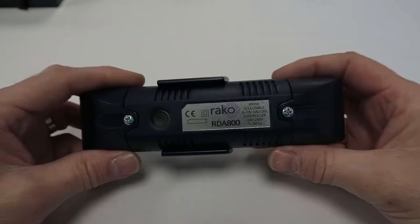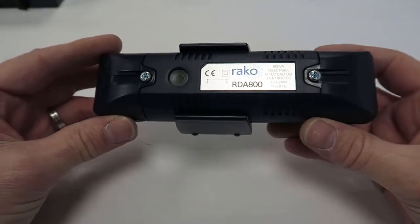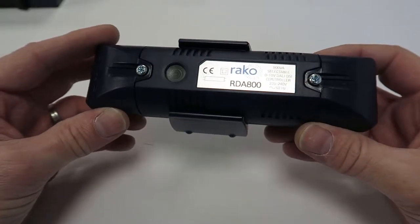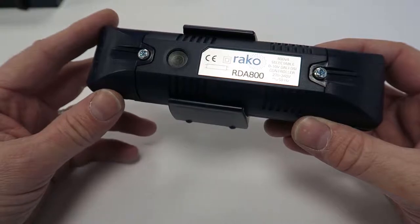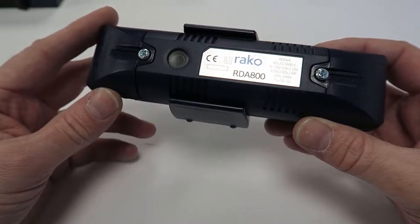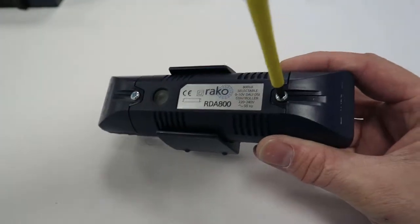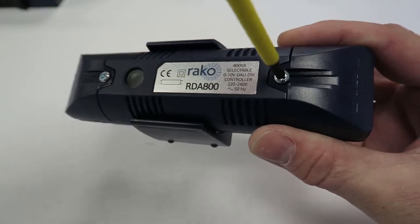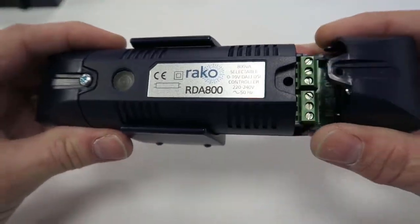We also have, as part of their wireless range, a slightly larger module here. And this is a very clever device actually, it's 0-10 dimming, DALI dimming, or DSI. There's a selector switch inside, let's have a quick look inside here, that basically you select what kind of dimming you want to use.